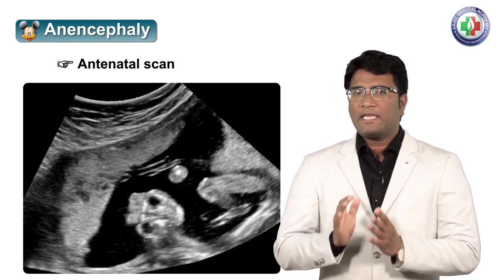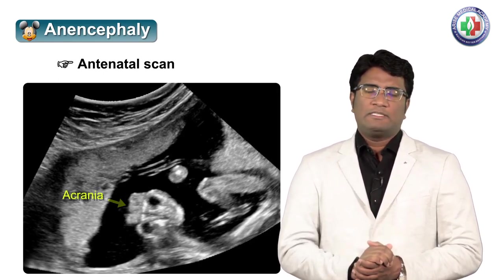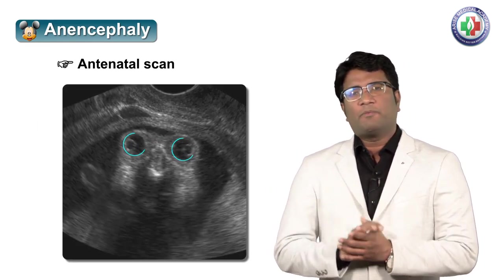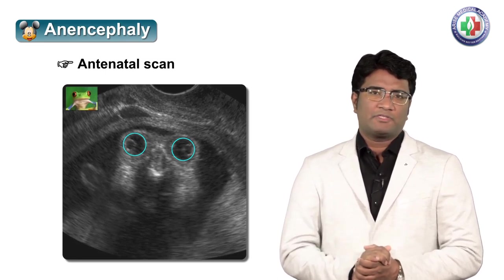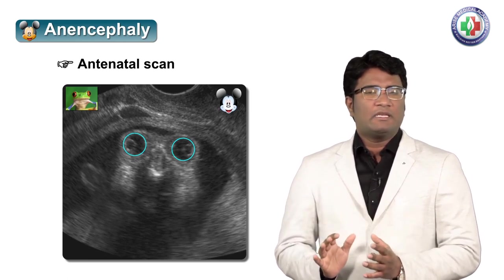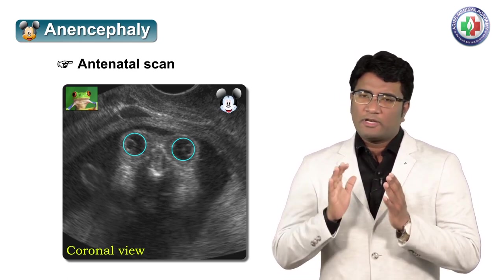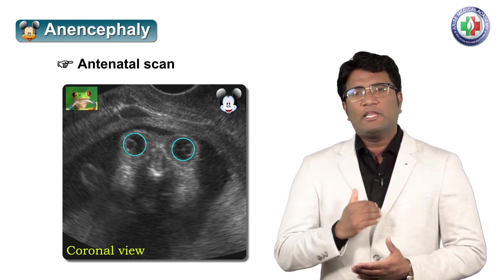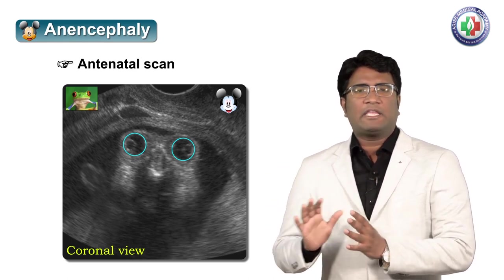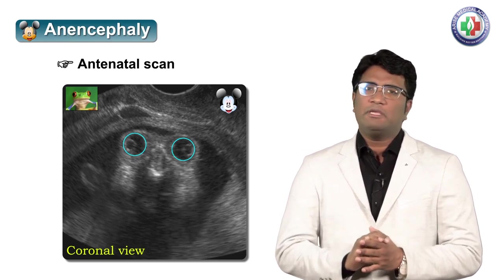Another site where we see Mickey Mouse appearance is on an antenatal scan. In a case of anencephaly where there is no cranial vault — acrania — the appearance of the orbits takes the shape of a frog eye appearance. This frog eye appearance or Mickey Mouse appearance is seen associated with anencephaly on a coronal image obtained on ultrasound. So on an antenatal scan coronal view, the appearance of anencephaly has been likened to the frog eye appearance or the Mickey Mouse appearance.